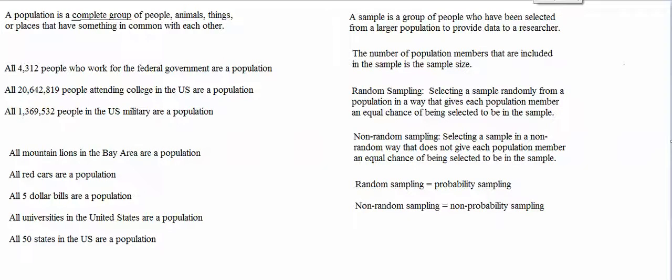The number that I'm calculating by adding up the GPAs of the 200 people in my sample and dividing the total by 200 is called a sample mean. The number that I would get if I was able to add up the GPAs of all 20,642,819 college students in the U.S. and then dividing the total by 20,642,819 would be called a population mean.